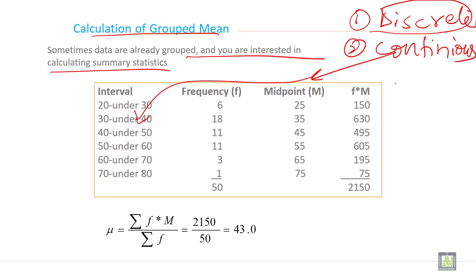To calculate mean for grouped data, the symbol is mu. Mu equals sigma fm divided by sigma f. f is frequency, it is given here. And what is m? M is midpoint. You need to calculate the midpoint. It is not given. How can you calculate the midpoint?